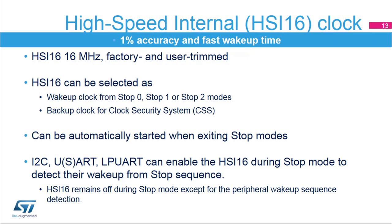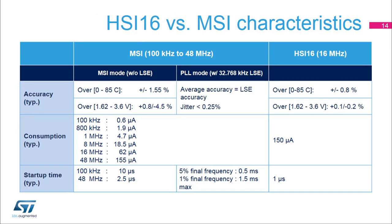HSI16 is enabled only for the wake-up sequence detection and remains disabled outside of this wake-up sequence. This table compares the HSI16 and MSI characteristics. The HSI16 accuracy is better than that of the MSI when not used in PLL mode. In PLL mode, the average MSI accuracy equals the LSE accuracy of the 32.768 kHz external crystal, resonator, or clock. The MSI power consumption is much lower for the same frequency than the HSI16, and is only 600 nanoamps at 100 kHz. The HSI16 offers the fastest wake-up time, only 1 microsecond. The maximum time needed for the MSI to be stabilized at 1% of final frequency in PLL mode is 1.5 milliseconds.